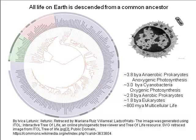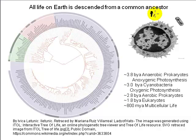The Earth itself is about 4.6 billion years old, and researchers use a variety of microfossil, geological, and radiometric dating techniques to reconstruct a likely timeline for the evolution of cellular life. Based on this sort of evidence, it's pretty clear that simple cells were present at least 3.8 billion years ago, and perhaps as early as 4.1 billion years ago.